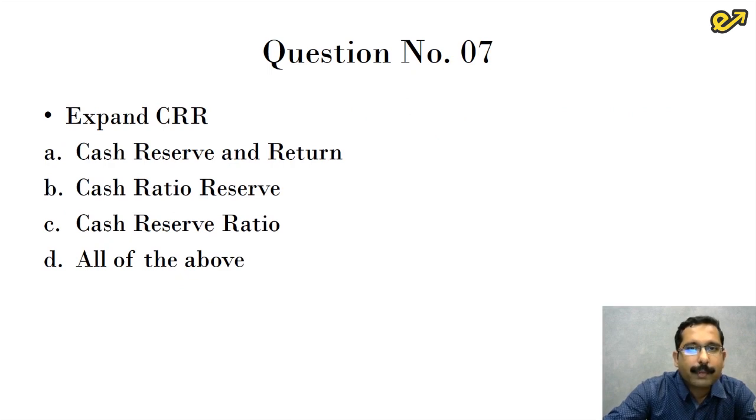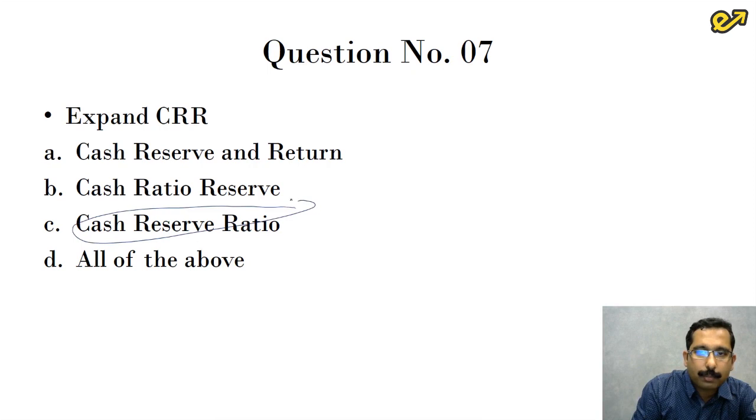Next question, expand CRR. This is a sort of a lottery question for us. Answer is simple, straightforward. It is cash reserve ratio. Again, the answer is option C.